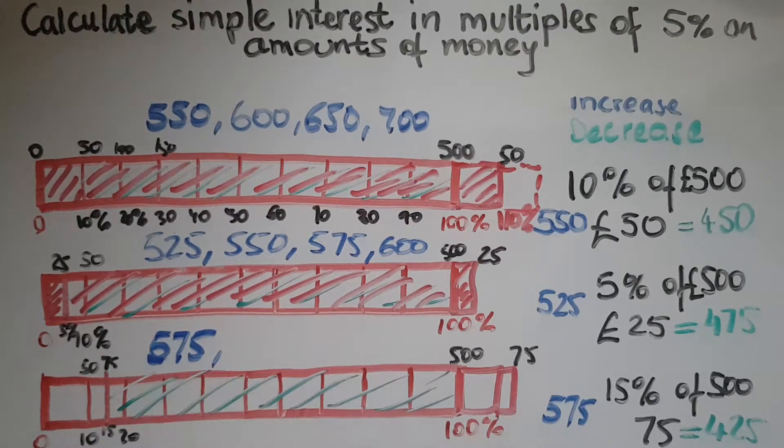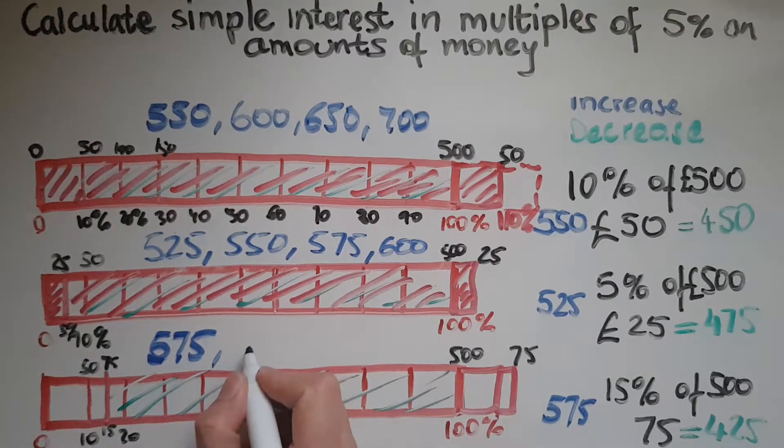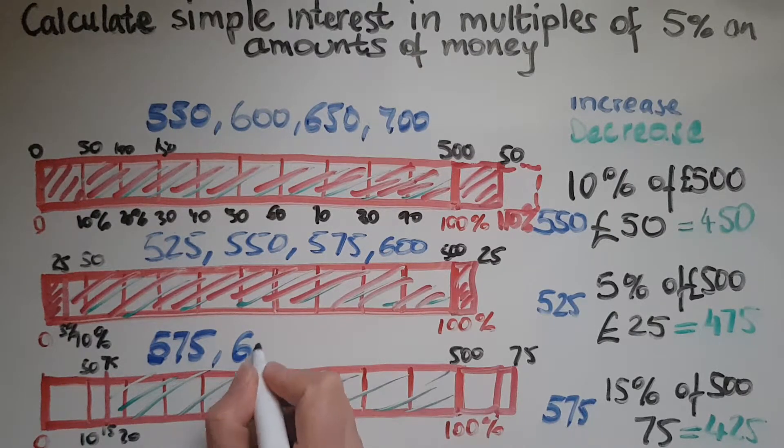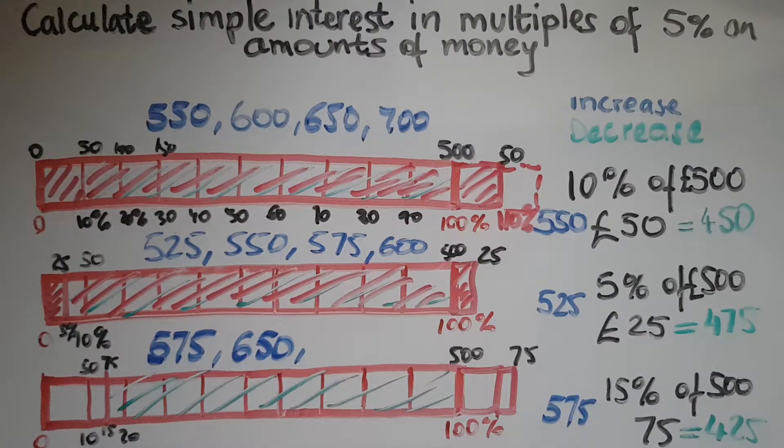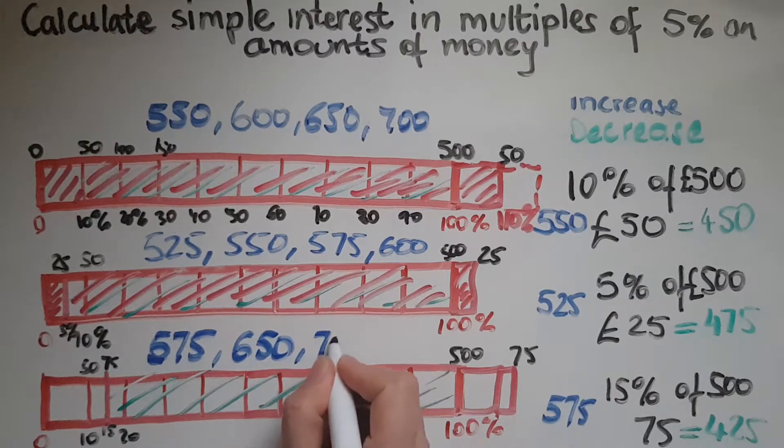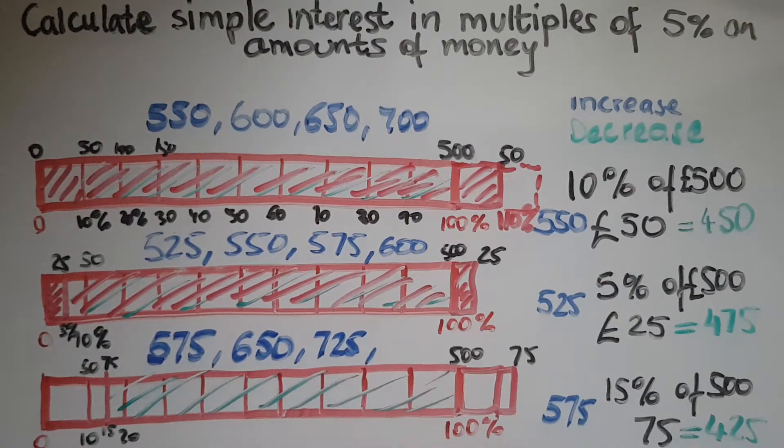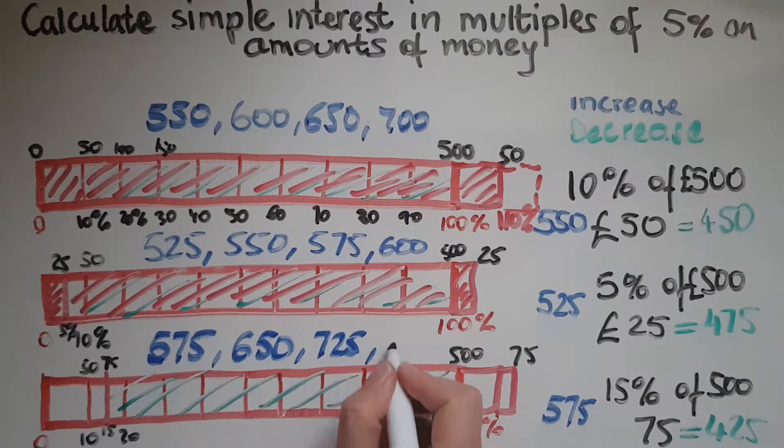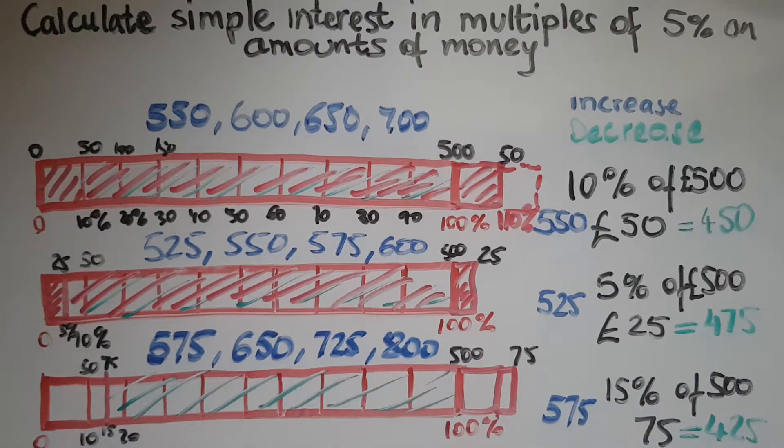At the end of year two, you'd have £650. At the end of year three, you'd have £725. At the end of year four, you'd have £800 and so on.